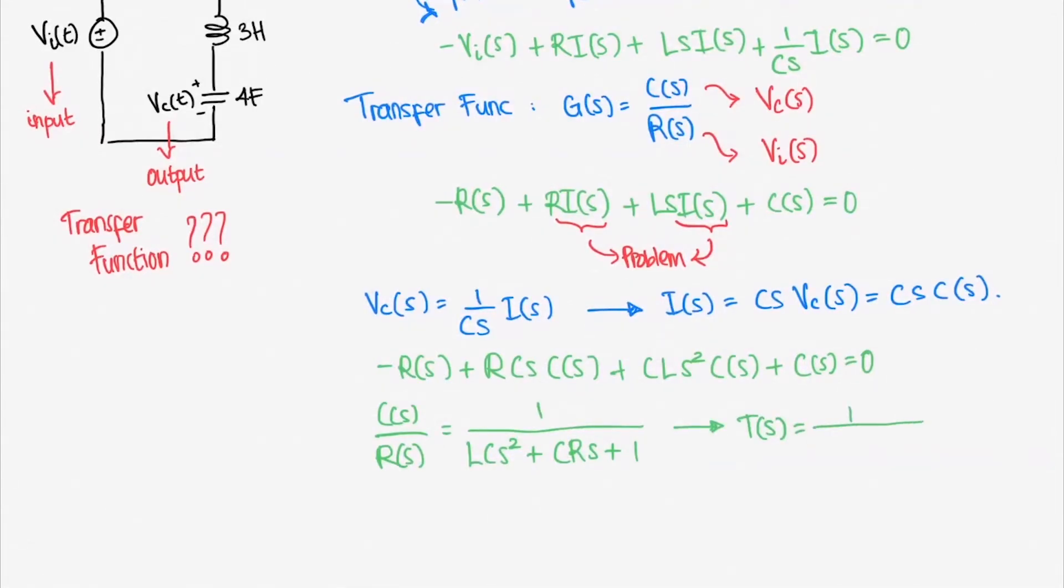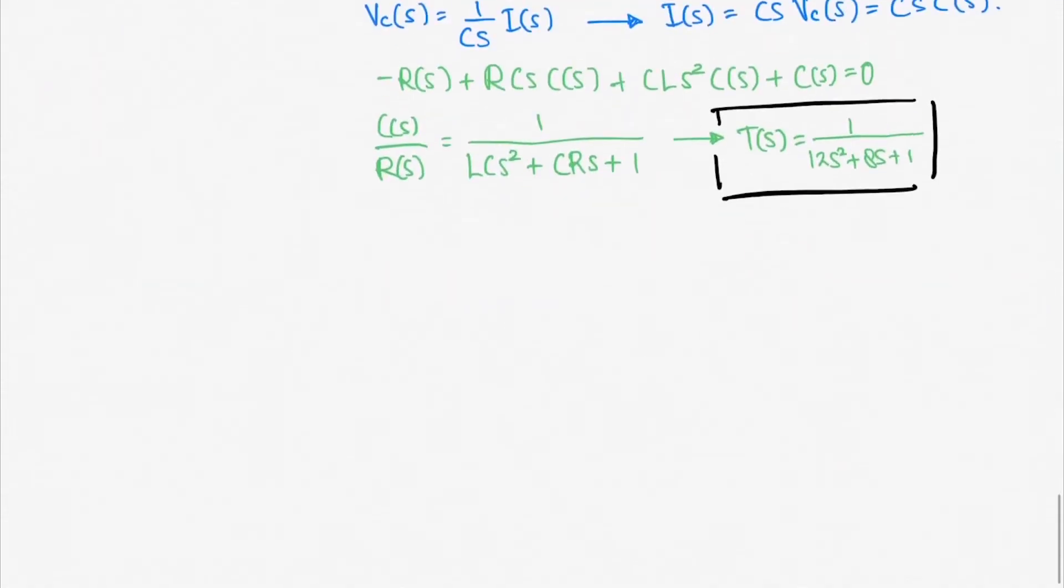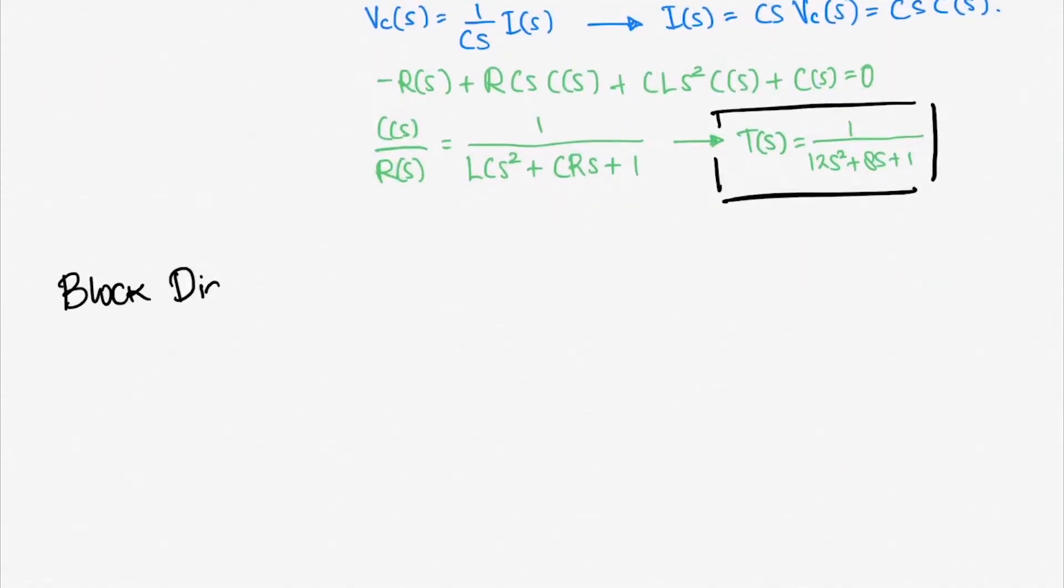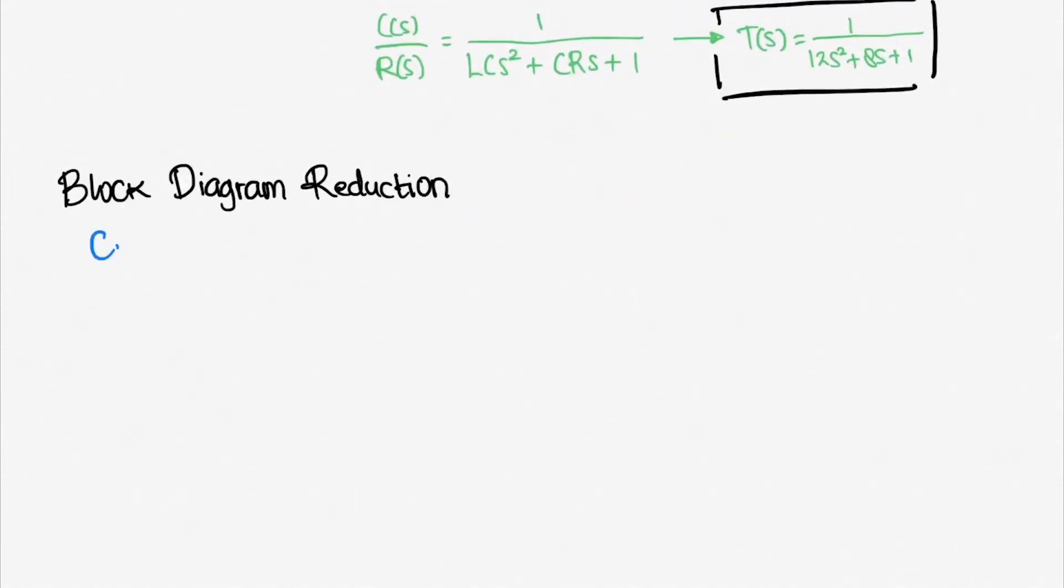That was the transfer function. Now let's talk about block diagram reduction. Usually, there are two configurations of block diagram: cascaded block diagram and feedback block diagram. It's very simple. It's just multiplication. For feedback block diagrams, let's derive it to give you a sense of how to manipulate the block diagram.